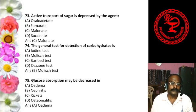Question 26: Isomers differing as a result of variation in configuration of the OH and hydrogen group on carbon 2, 3, or 4 of glucose are known as — Epimers, Anomers, Optical isomers, or Enantiomers. The answer is epimers. Question 27: Alpha-D-glucose and beta-D-glucose are — Stereoisomers, Epimers, Anomers, or Ketol-aldol pairs. The answer is anomers.